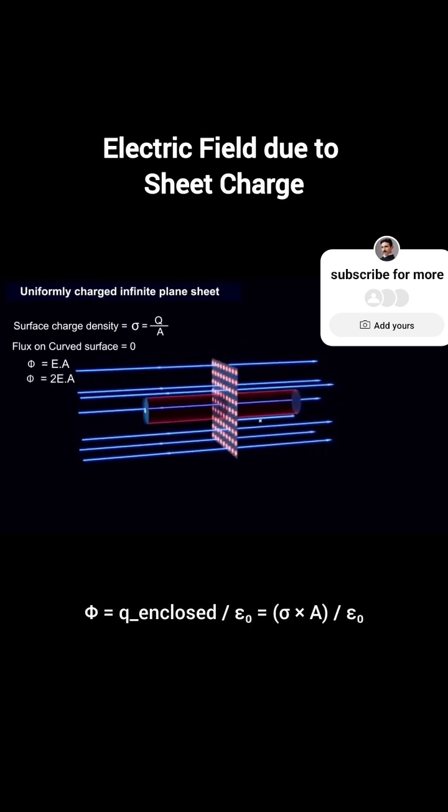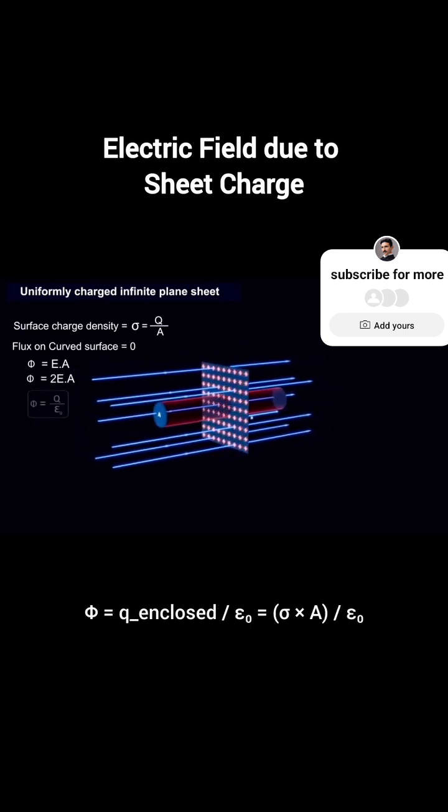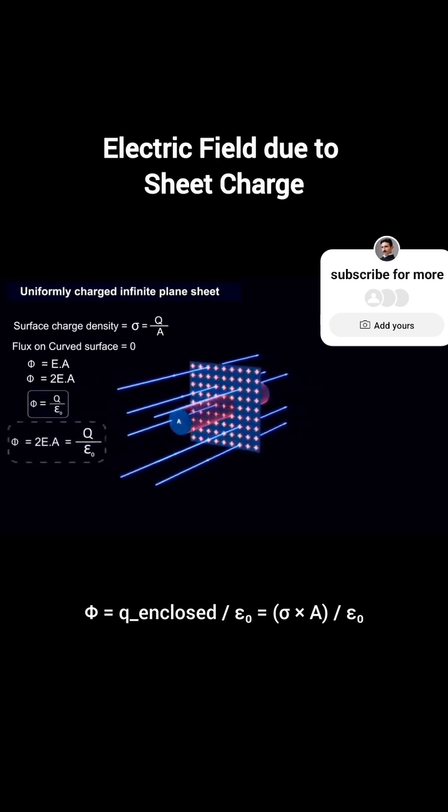Now, according to Gauss's law, phi equals Q enclosed divided by epsilon zero, which is sigma times A divided by epsilon zero.